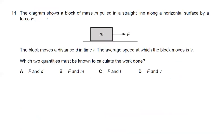Question eleven: a block of mass m is pulled in a straight line along a horizontal surface by force F, moving distance d in time t at average speed v. Which two quantities must be known to calculate the work done? Work done equals force multiplied by distance, so F and d must be known. Answer A is the right answer.